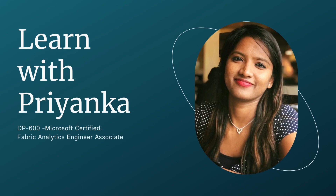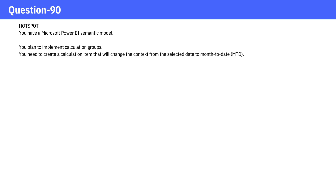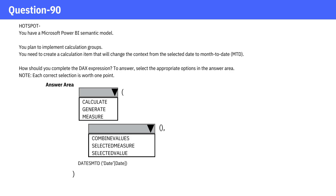Welcome to Learn with Priyanka. Question 90. You have a Microsoft Power BI semantic model. You plan to implement calculation groups. You need to create a calculation item that will change the context from the selected date to month to date. How should you complete the DAX expression? To answer, select the appropriate options in the answer area. Take a moment to think and verify your answer.